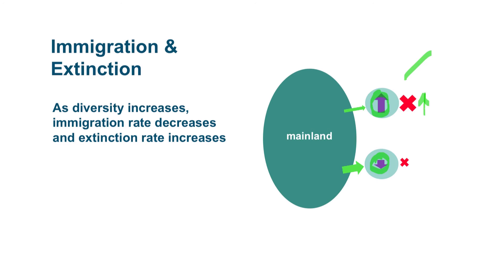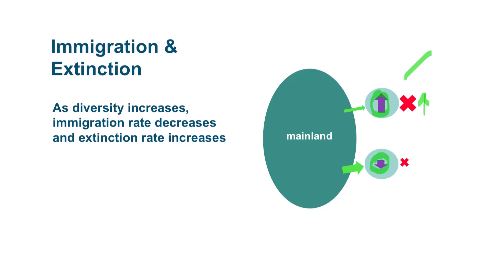The reason that happens is because the more species that end up on the island, the less likely it is that each new individual coming to the island is going to represent a new species. And the reason extinction goes up is because the more individuals there are on the island, the more competition there's going to be.